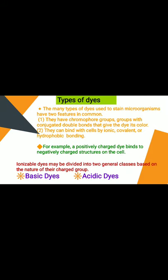Regarding types of dyes: the many dyes used to stain microorganisms have two features in common. First, they have chromophore groups — groups with conjugated double bonds that give the dye its color. Second, they can bind with cells by ionic, covalent, or hydrophobic bonding. For example, a positively charged dye binds to negatively charged cell structures.